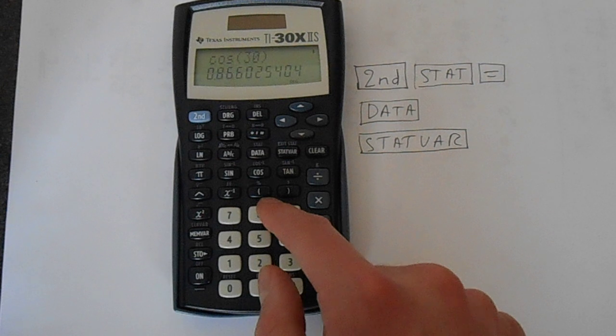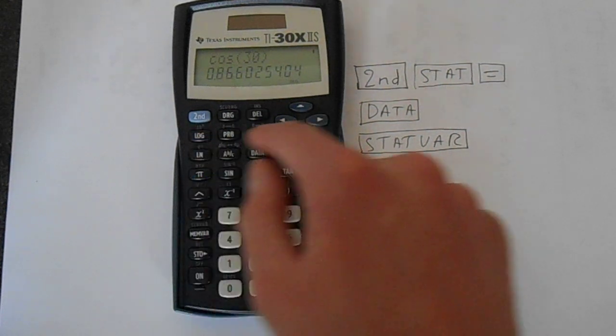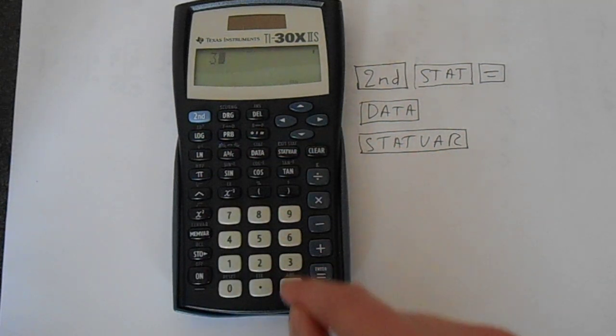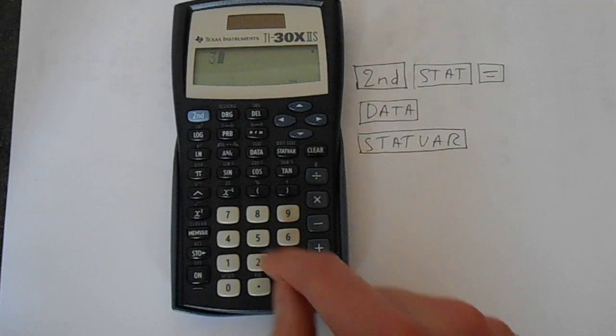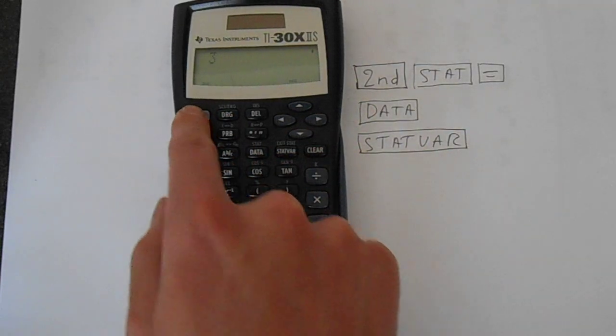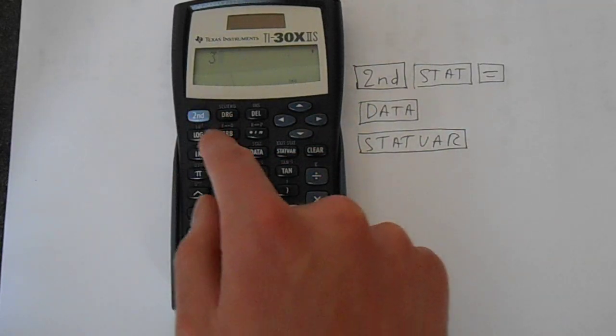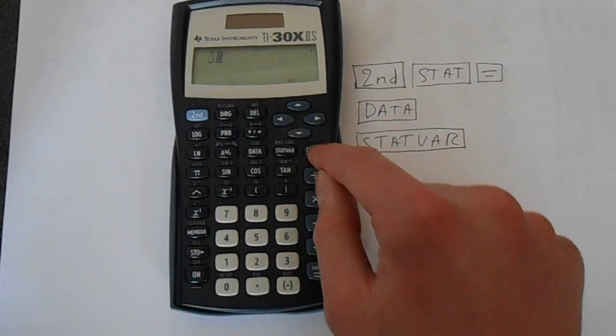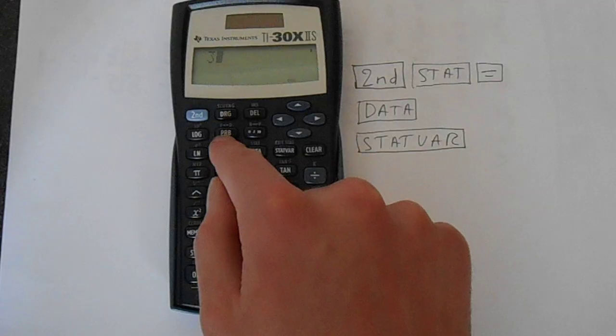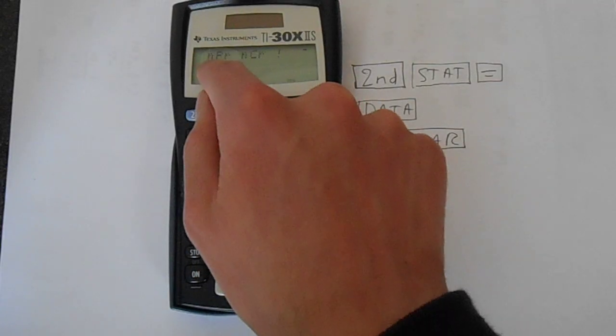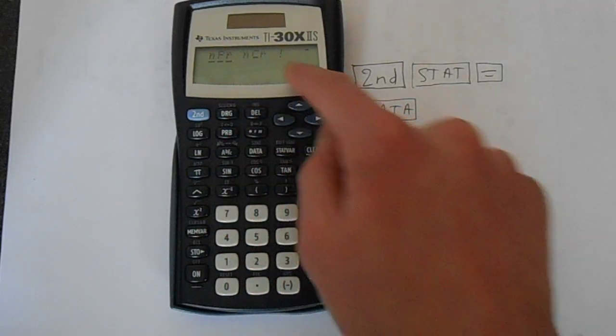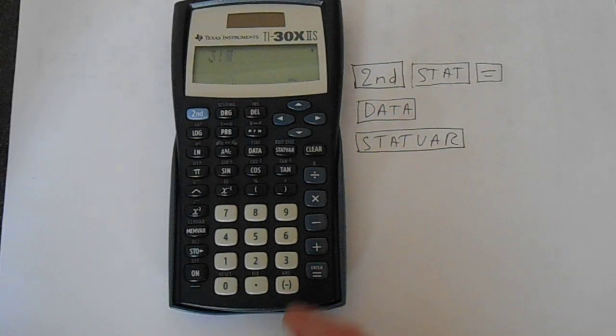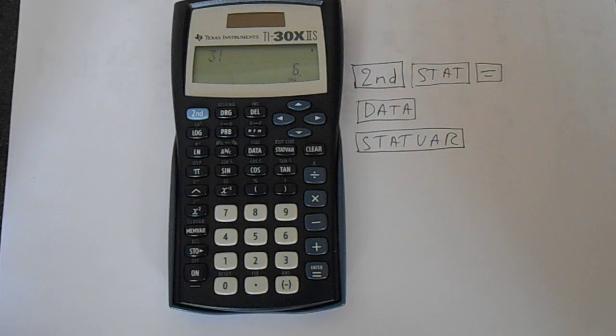Again, stuff that's hidden away: you've got the factorial keys. So say we want three factorial. Just clear what's there. Three, second function, the prob button. I'll show you that again. So on the probability button, the prob button, you get permutations, combinations, and factorial. So press enter on that and you get factorial. People struggle to find that. It's very well hidden.